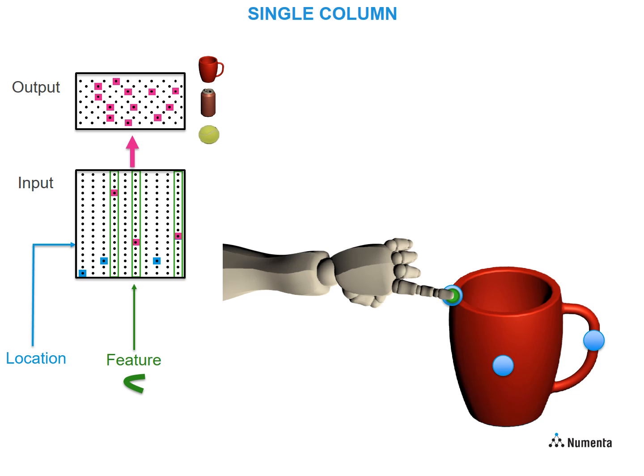So after this second touch, the output layer integrates its previous representation with the current input and knows that it can't be the ball. Notice the output representation is becoming smaller. Now it's a union of the input from the two touches. As a result, it represents only two possible objects.